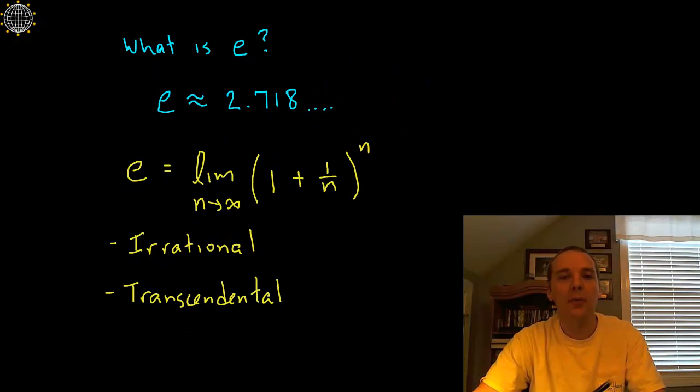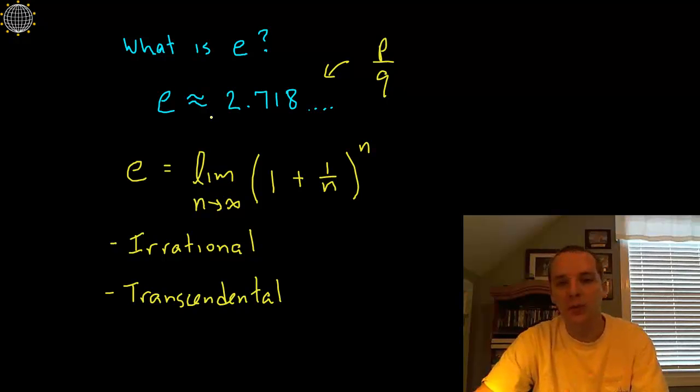A couple properties before we get into why this came about: it's irrational, which means this number cannot be expressed as a fraction. You can't express e as like 7 over 2 or 22 over whatever. You can't express it as some decimal quantity because it's never ending and never repeating, so you won't be able to express it as a fraction ever.